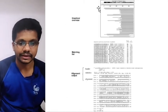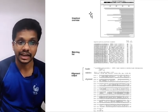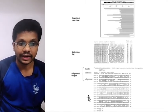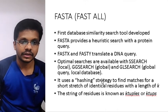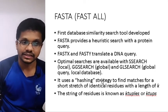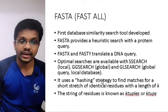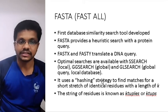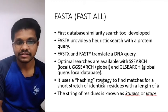BLAST provides three different types of results: a graphical overview of the query, a matching list showing which sequences match your query, and an alignment output showing how the two sequences are aligned. Another similarity searching method is FASTA, which is famous for the FASTA format. FASTA is the first database similarity search tool.